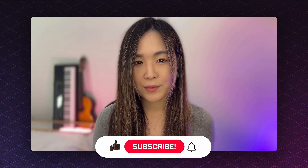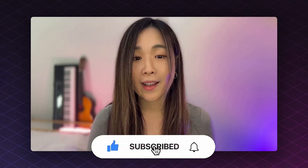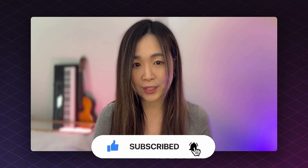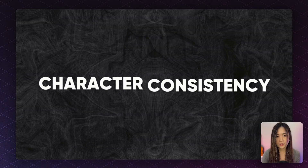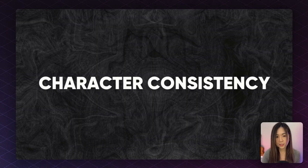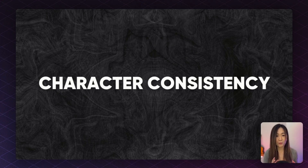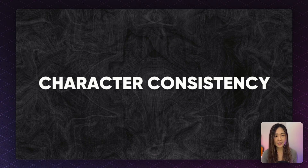Before we dive in, if you like content like this remember to like and subscribe — I really appreciate your support. Now let's dive into the 10 most mind-blowing use cases. Number one is character consistency, which used to be AI's biggest weakness. Most models could capture the general vibe of your character, but getting the exact face and outfit right was nearly impossible. Flux Context may be the closest to nailing it at the moment.